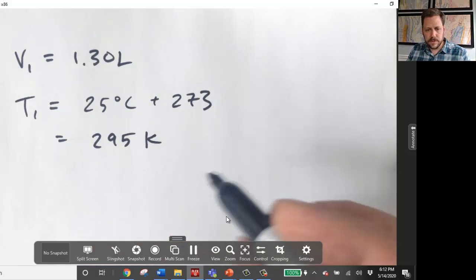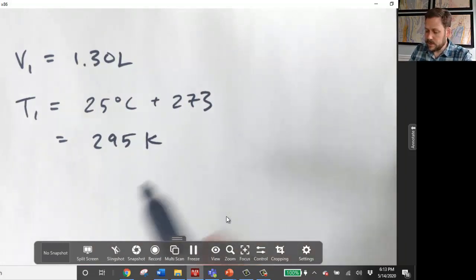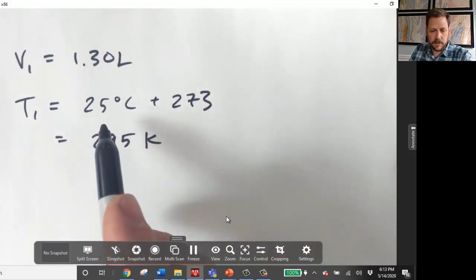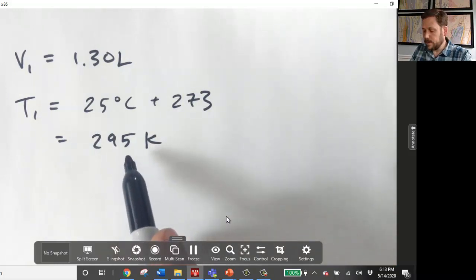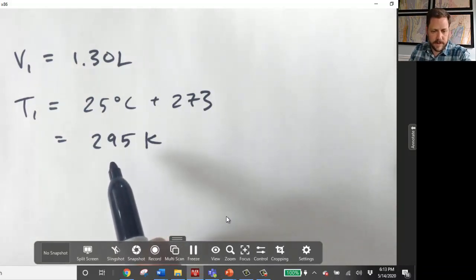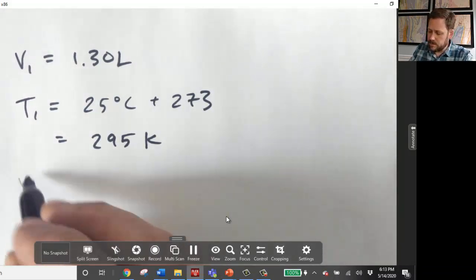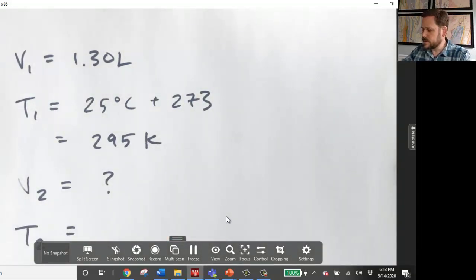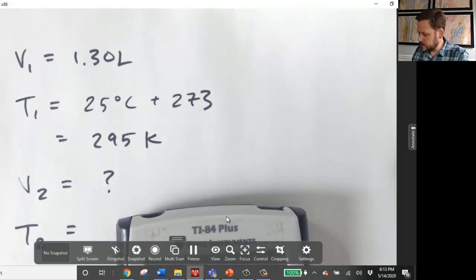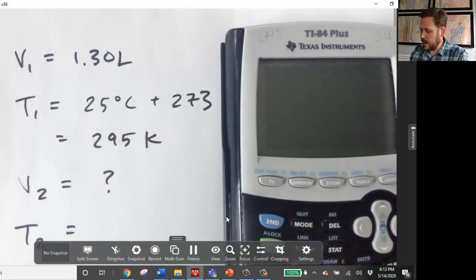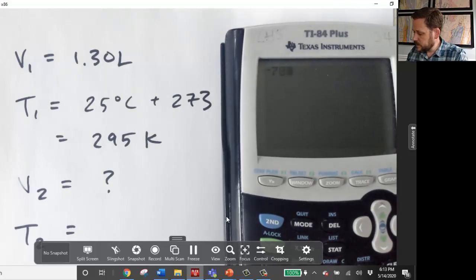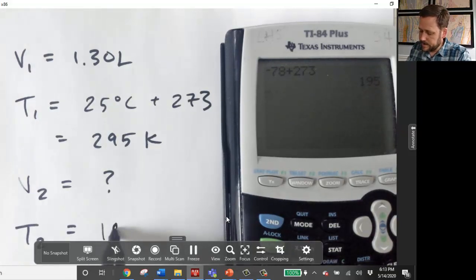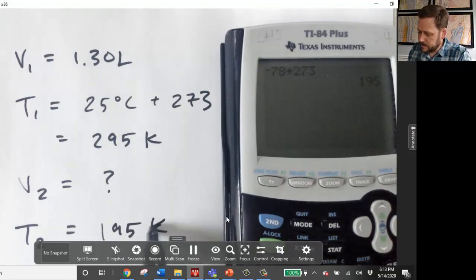We are going to use the rules for significant figures for addition, which states that the number with the least precise placeholder value is going to dictate how many placeholder value units we can include. So this is going to be 295 Kelvin. We want to solve for the final volume when the temperature drops down to negative 78. So what's negative 78 in Kelvin? Again, we need to go ahead and take 273 and add it to our number. So negative 78 plus 273, that gives me a temperature in Kelvin of 195, 195 Kelvins.